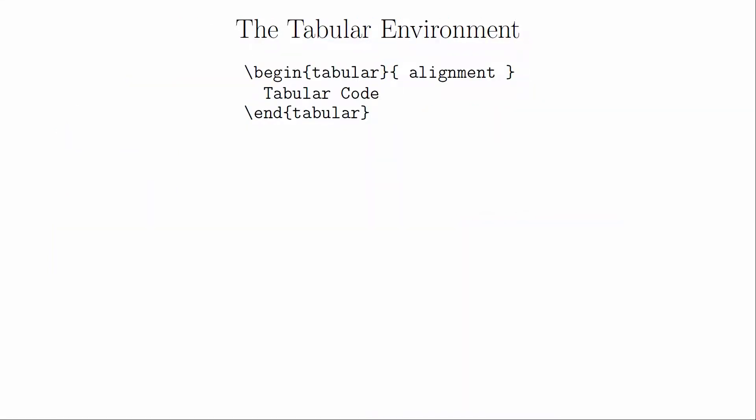The tabular environment requires you to define the number of columns and their alignments. This is perhaps best understood through an example. For this table, we will use LCR to define our columns. What this means is that we will have three columns where the first is left justified, the second is centered, and the third is right justified.